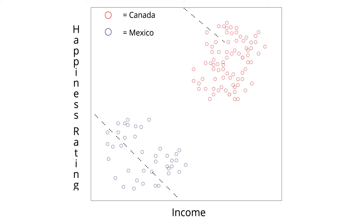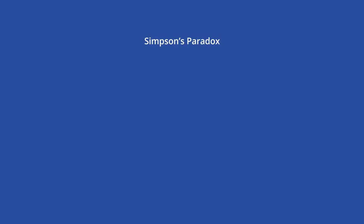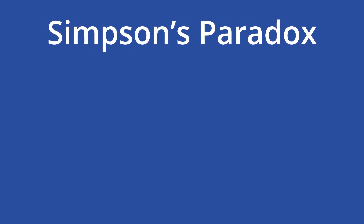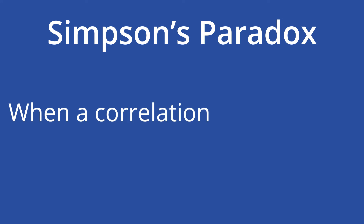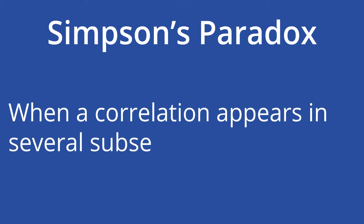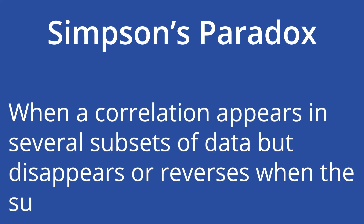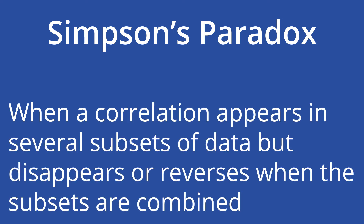Different patterns can be observed from the same set of data depending on how it is partitioned or separated. Two variables in this hypothetical — money and happiness — have a negative correlation when considered separately from Mexico and Canada, but when they are analyzed together, they have a positive correlation. This is an example of Simpson's paradox, a statistical phenomenon that occurs when a correlation appears in several subsets of data, but disappears or reverses when the subsets are combined.